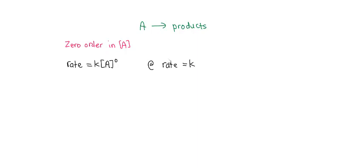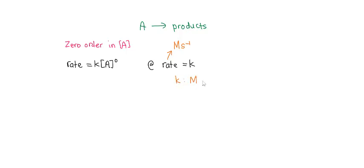So the units for rate are in molar per second. We know that rate is molar per time, so let's say time is in seconds. The units of K will become molar per second because rate equals K for zero-order.